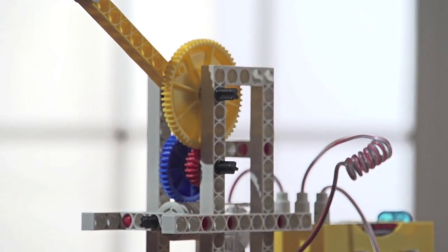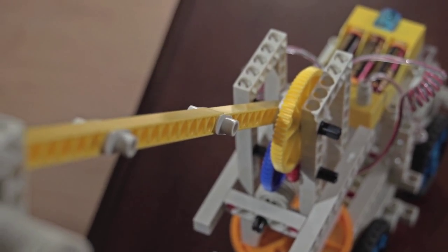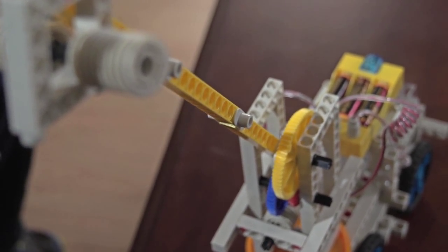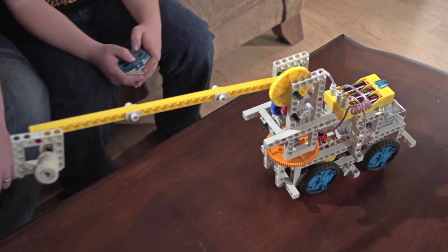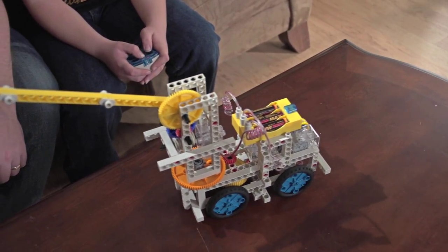And with the battery-powered motor they can bring their creations to life. Yes kids can control their inventions making arms move and wheels turn thanks to a six-button handheld wireless remote.